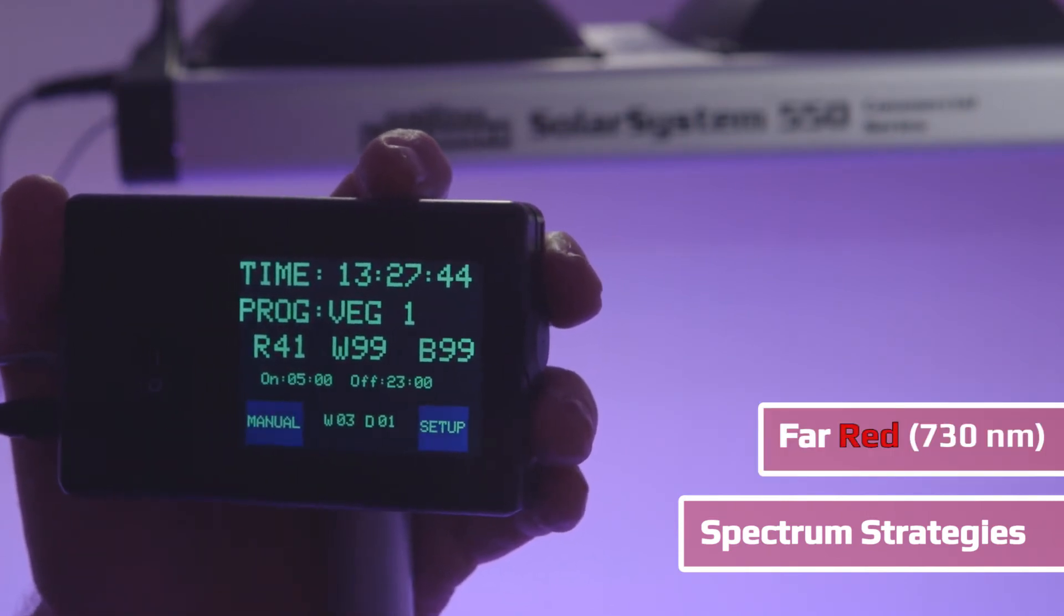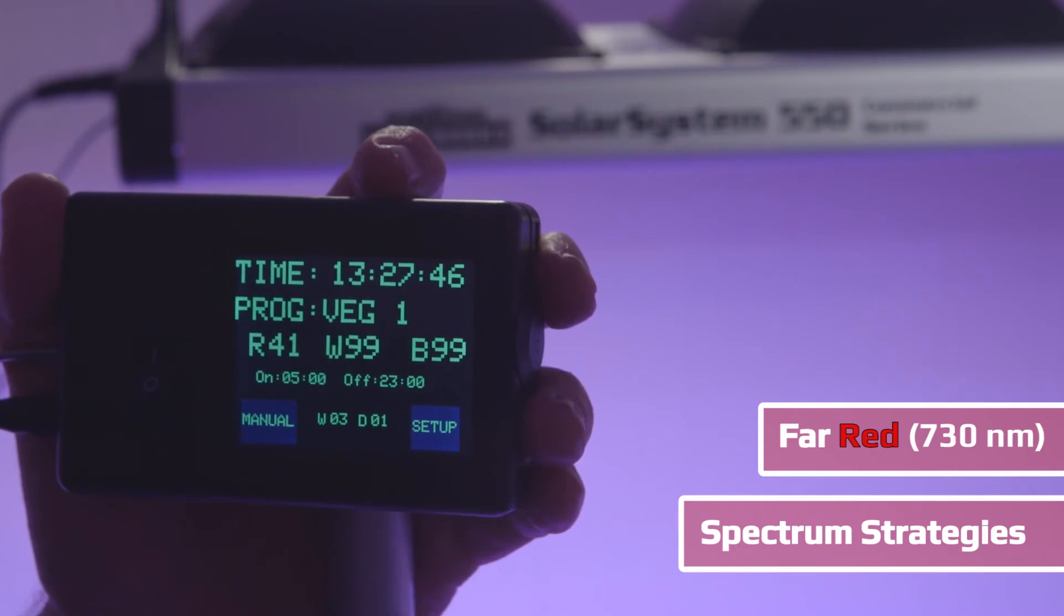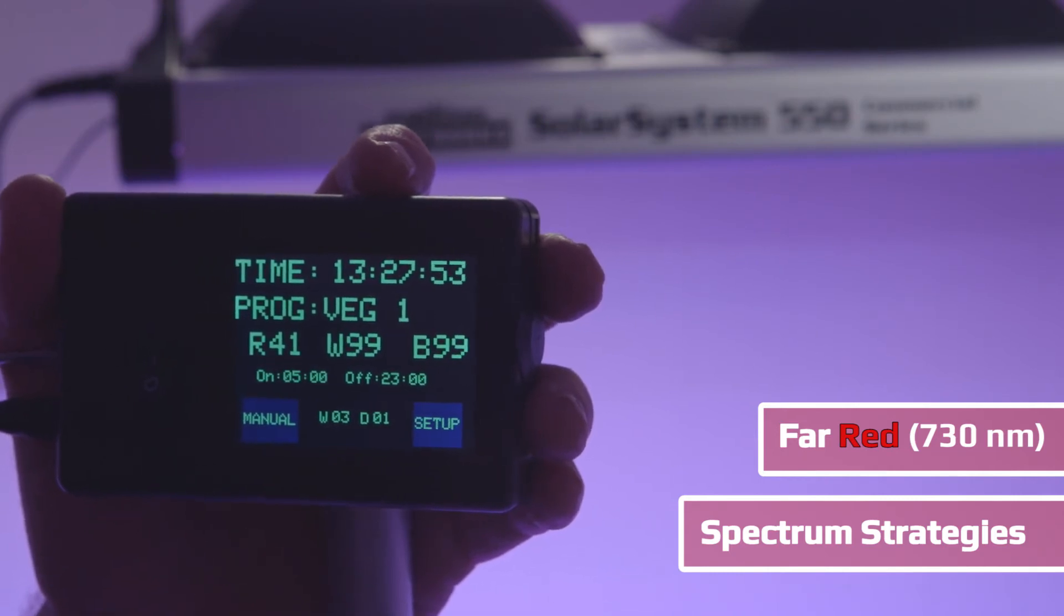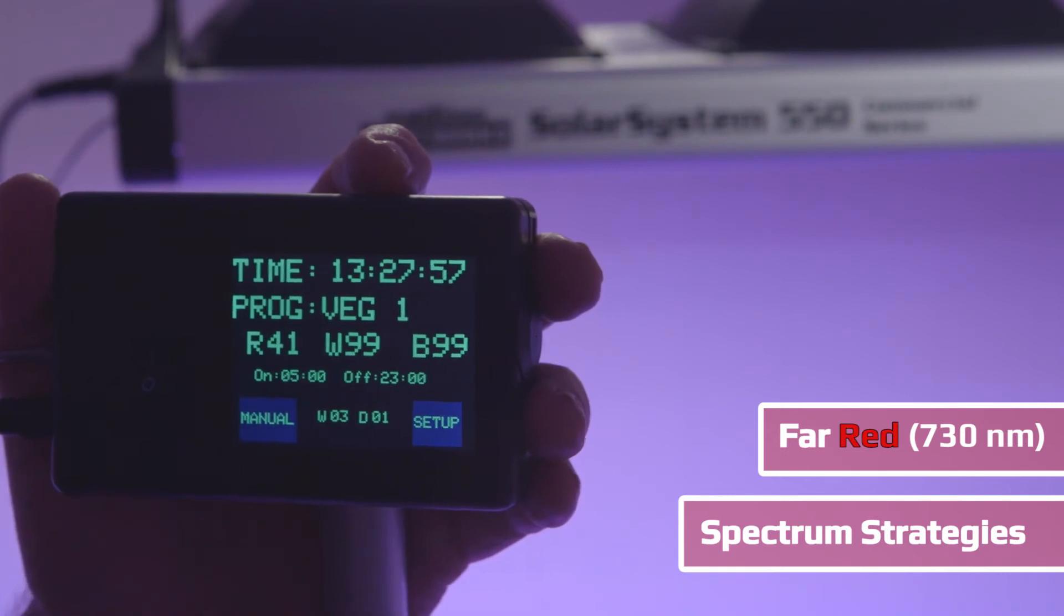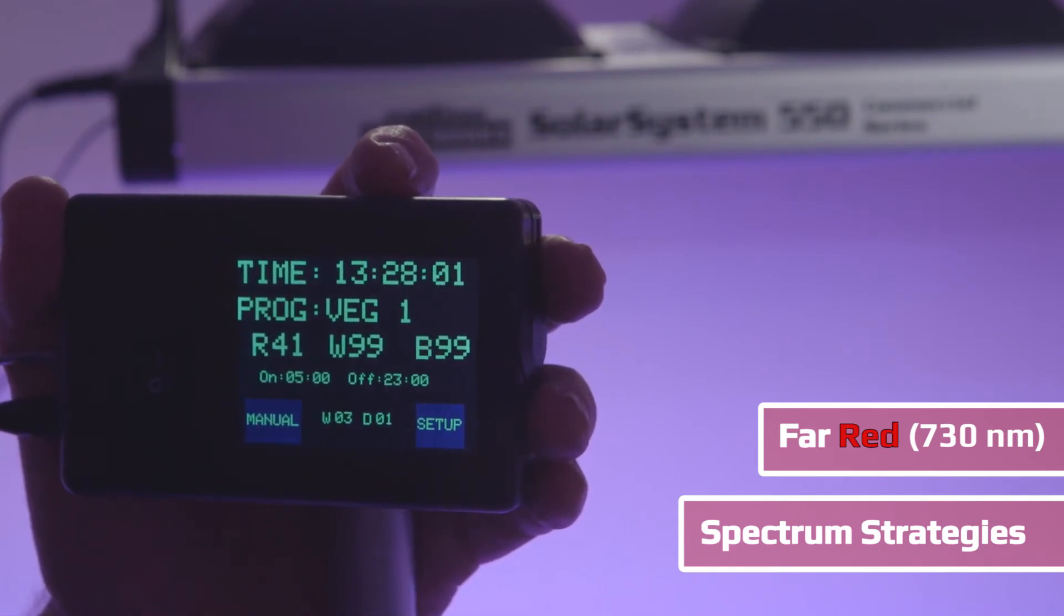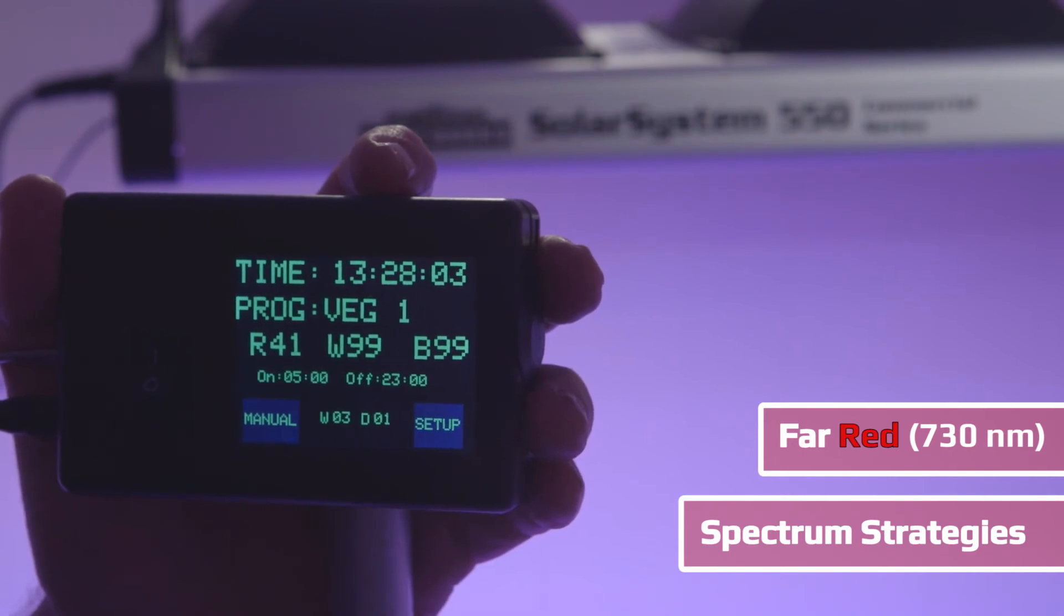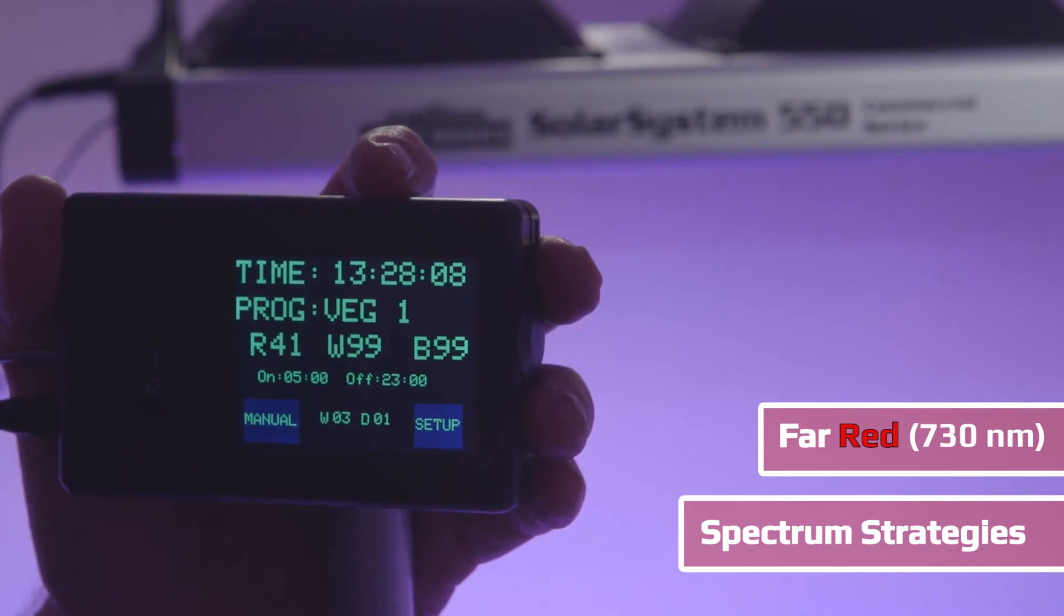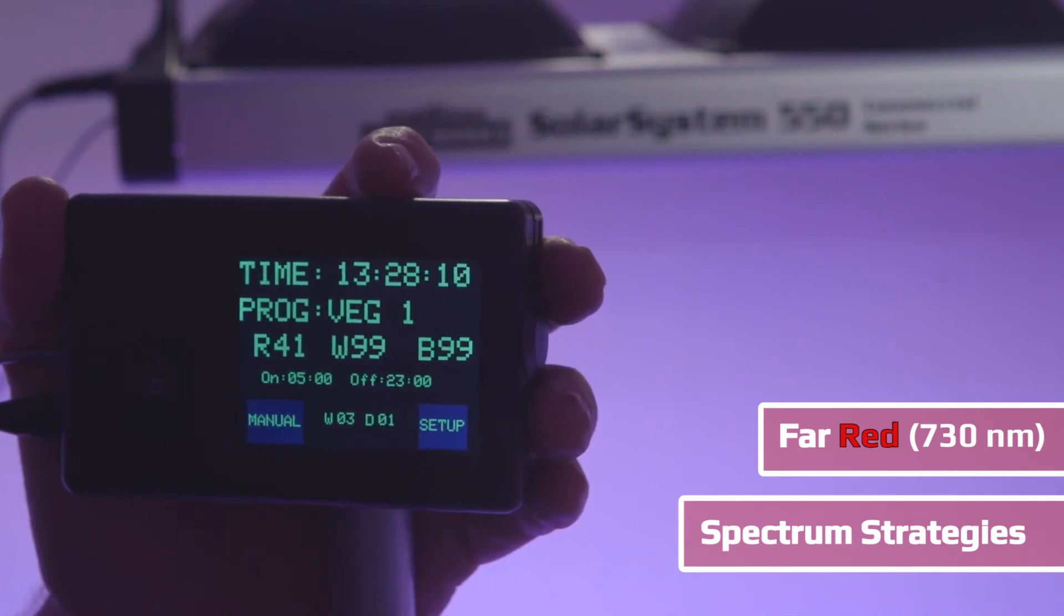There are a few other strategies incorporated into the Solar System series. One of them is far red. Far red is 730 nanometers, which is not included in the regular lights and not included in most grow lights because there is no photosynthesis at that level.